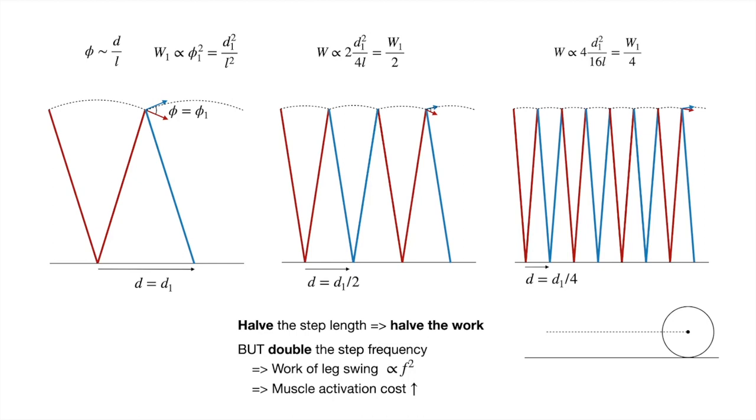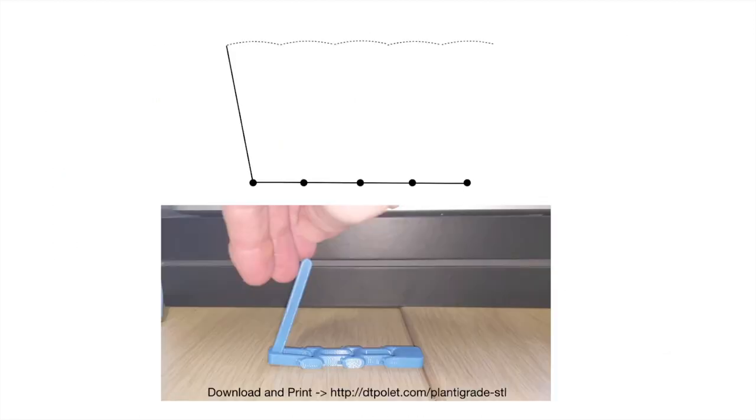But we also double the step frequency, which means we increase the work to swing the leg and we also increase the activation cost from turning our muscles on and off. But now we will propose that we can achieve a sequence of mini-vaults like what we just saw in a single step by using a plantigrade posture.